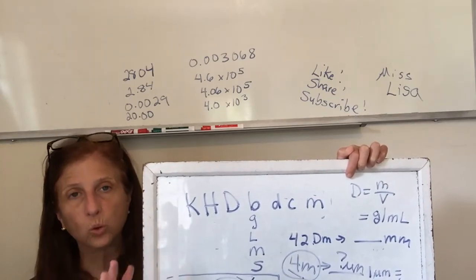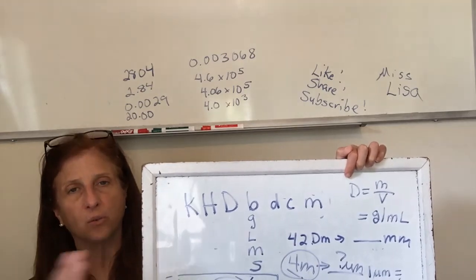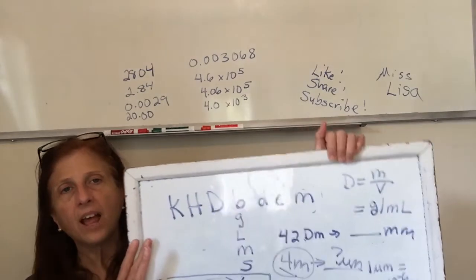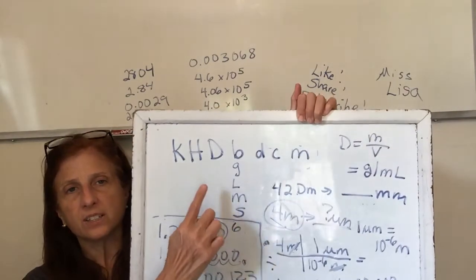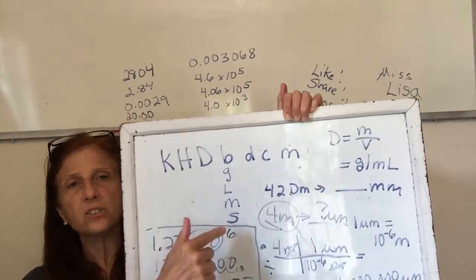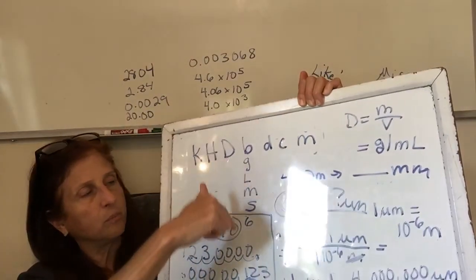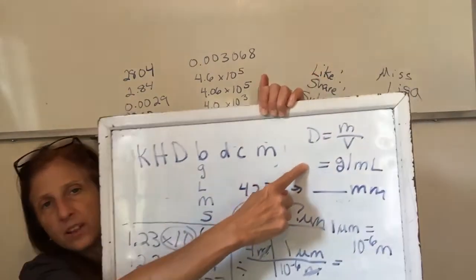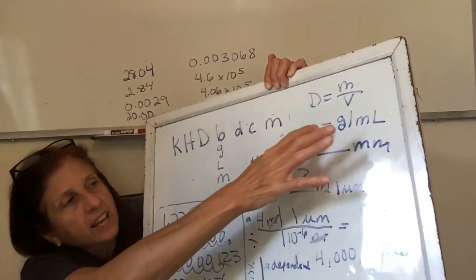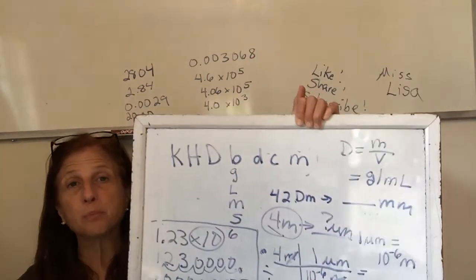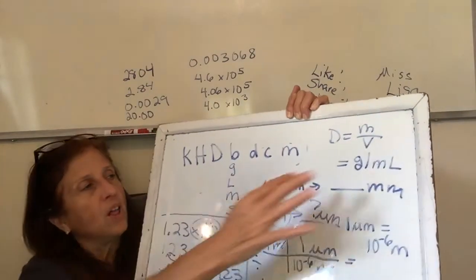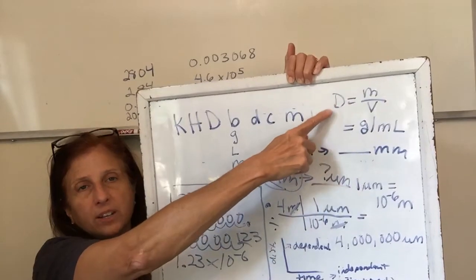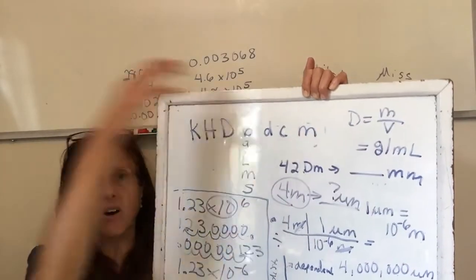One more point: grams, liters, meters, seconds are base units, but you can also have derived units. The unit for density is grams per milliliter; the unit for speed is miles per hour — those are derived units where you do the same math on the units as you do on the numbers. Per means division. I want you to write per as a slash only when it's units/letters — otherwise use flat fraction bars for numbers, because students' bad handwriting turns diagonal slashes into wrong numbers.